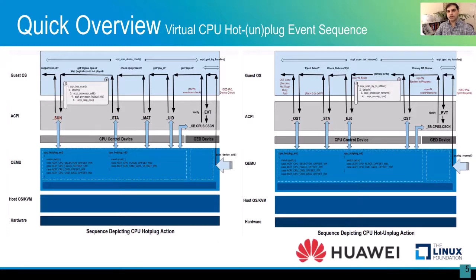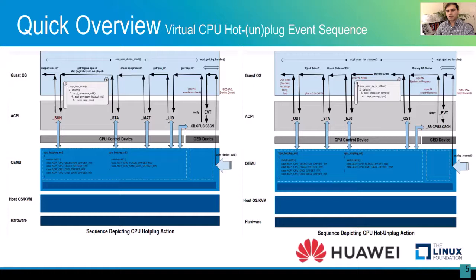The eventual result of these events is to first identify what event has happened — in the case of hot plug, to associate the physical ID (which in ARM terms we call the MPIDR) to the logical CPU ID. In the case of unplug, you identify the CPU being unplugged, try to offline that particular CPU, and the eject action takes place. These are well-understood concepts, and I'm going to present the known challenges.